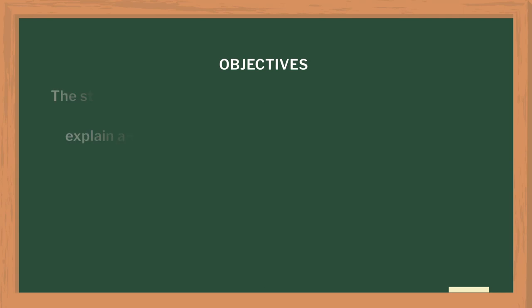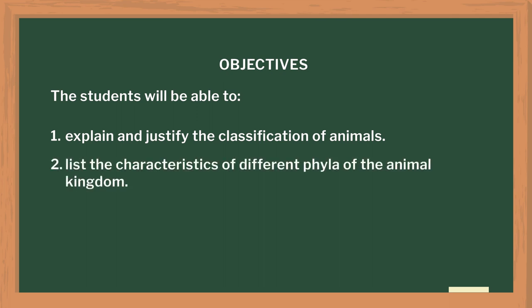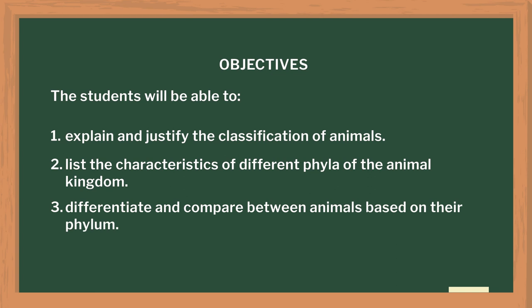In this lesson, we will explore the topic of biodiversity, particularly the kingdom Animalia, using some fun hands-on activities. We have found that using these simple activities is a really effective way of teaching this topic. The objectives of this lesson are that at the end of the lesson, the students will be able to explain and justify the classification of animals, list the characteristics of different phyla of the animal kingdom, and differentiate and compare between animals based on their phylum.